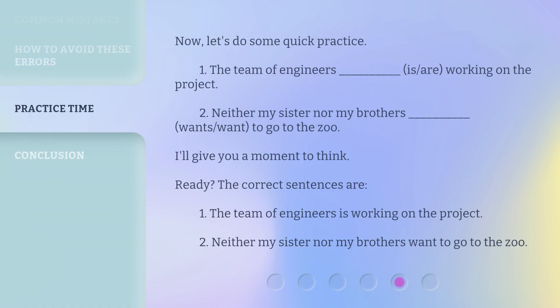Now, let's do some quick practice. 1. 'The team of engineers [blank: is/are] working on the project.' 2. 'Neither my sister nor my brothers [blank: wants/want] to go to the zoo.' I'll give you a moment to think. Ready? The correct sentences are: 1. 'The team of engineers is working on the project.' 2. 'Neither my sister nor my brothers want to go to the zoo.'